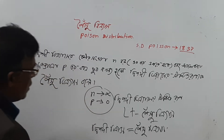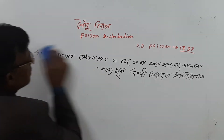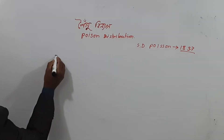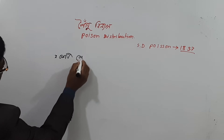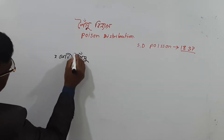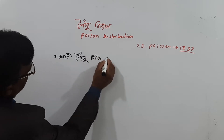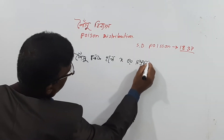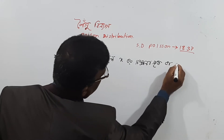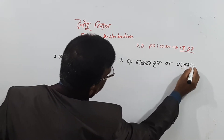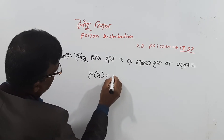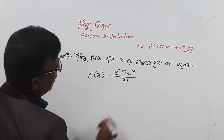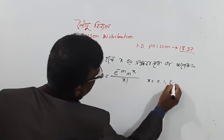So now let's write. The probability of X is a small mass. Probability of X is e to the power minus m, m power x, x factorial. Now what do you mean by x? 0, 1, 2, dot dot dot, infinity.